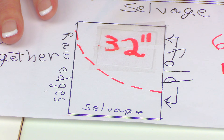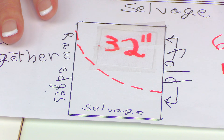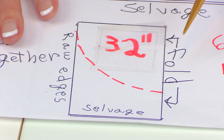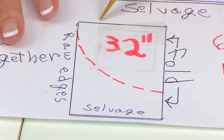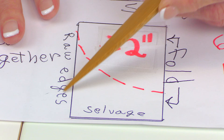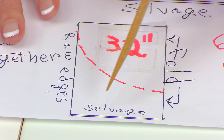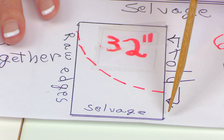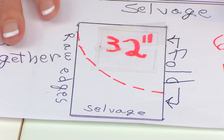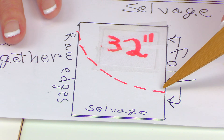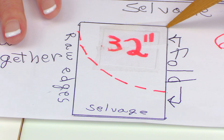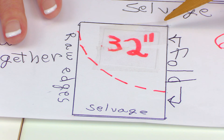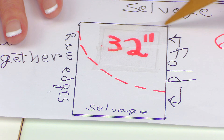So 32 inches will be the size to cut your two half circles. After you've folded your fabric, you've got a fold edge here and here, raw edges here, and your selvedge edges down here.